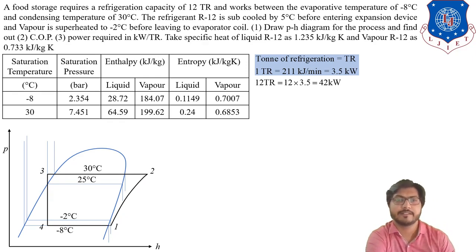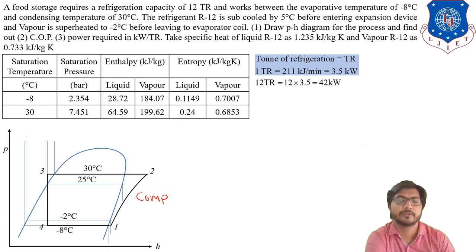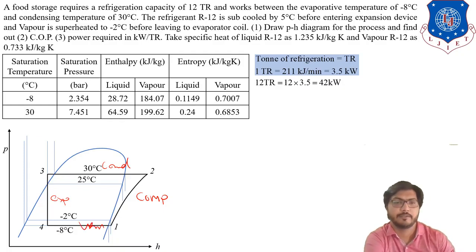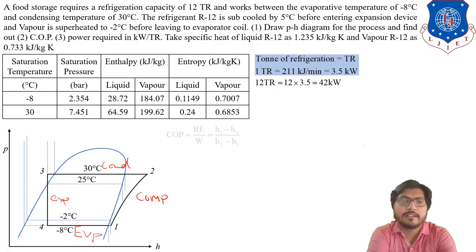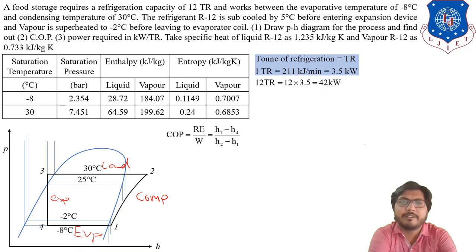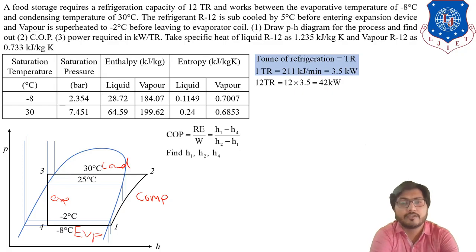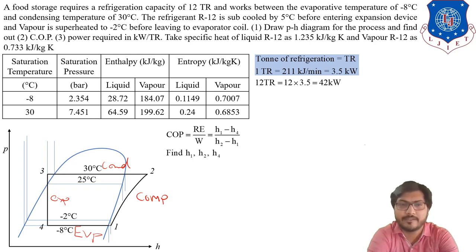The processes on the cycle are: 1 to 2 is the compressor, 2 to 3 is the condenser, 3 to 4 is the expansion valve, and 4 to 1 is the evaporator. The COP is refrigeration effect divided by work of compressor: COP = (h1 - h4) / (h2 - h1). To calculate COP, we need to find h1, h2, and h4.